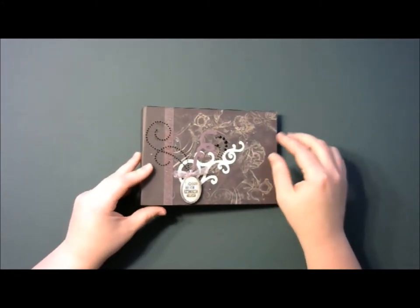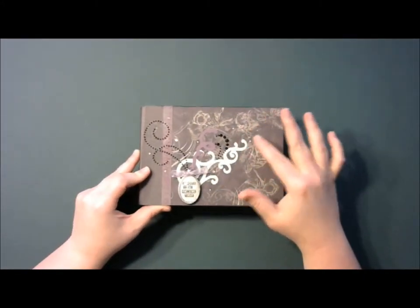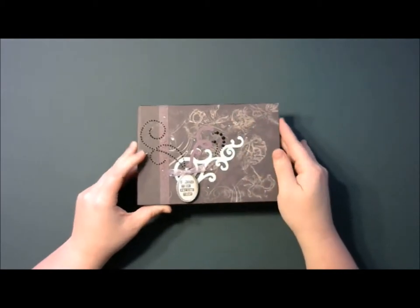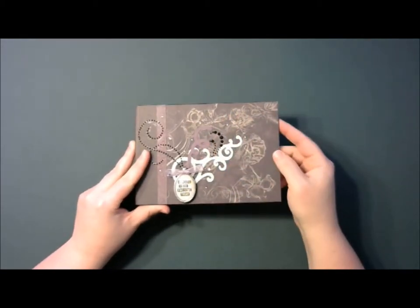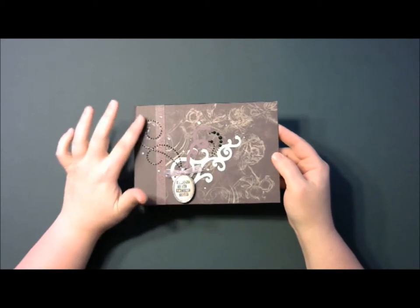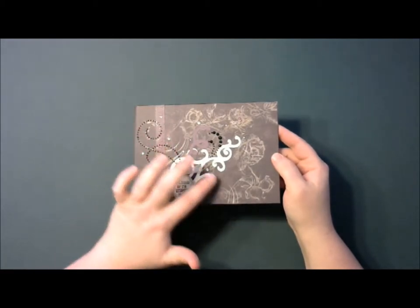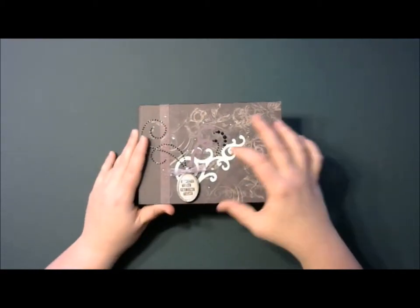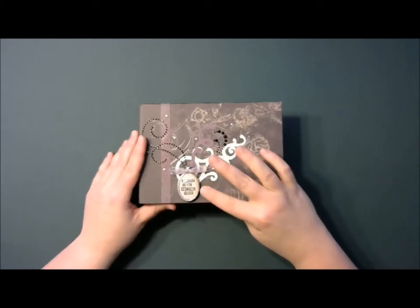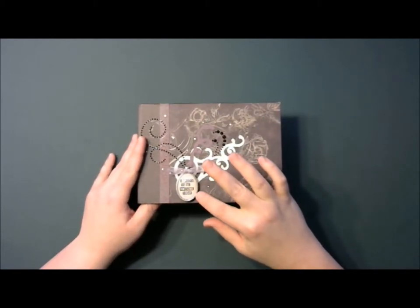On the front here, I added some swirls and flourishes I cut out from my Close to My Heart Cricut collections. This is a sparkle flourish and some individual sparkles here. And then this little embellishment here is from our Basin Link jewelry collection.